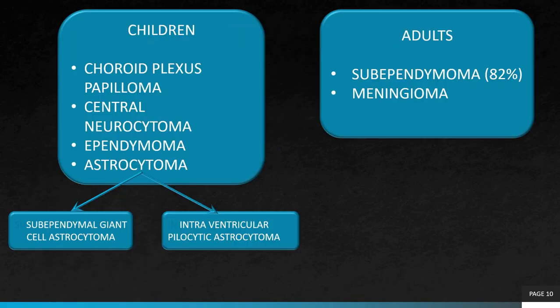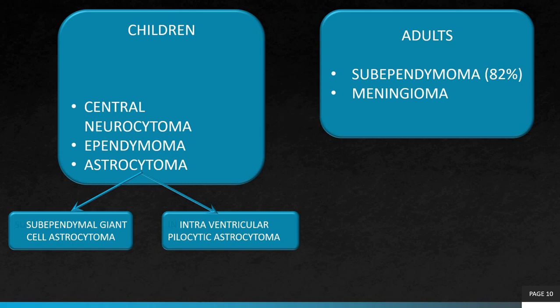These are the differentials we have. Choroid plexus papillomas are lobulated, they are very vascular and demonstrate avid enhancement, so they appear less likely. Central neurocytomas are bubbly in appearance, having multiple cystic lesions and flow voids, and they show moderate to strong contrast enhancement, so they also appear less likely.